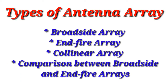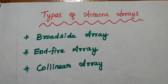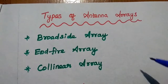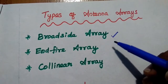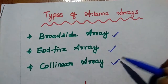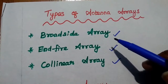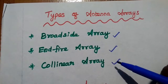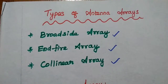Dear students, now we are going to discuss about types of antenna arrays and their comparison. There are various forms of antenna arrays available. The three major categories are: broadside array, endfire array, and collinear array. Let's see each one in detail.